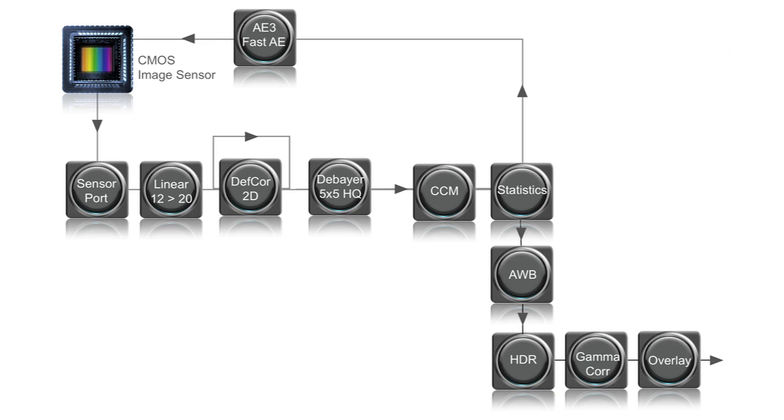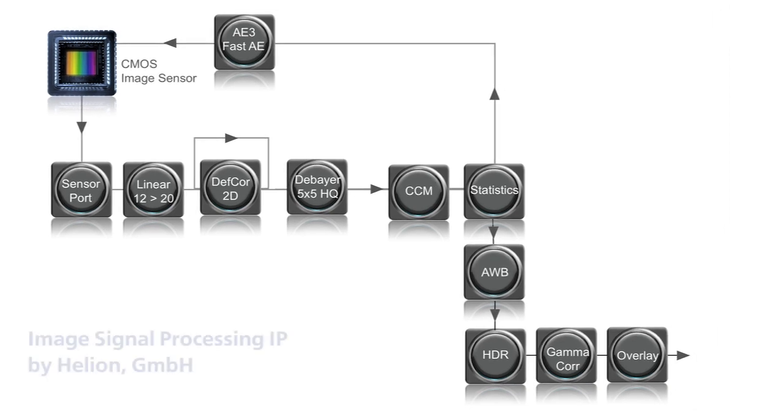A typical image signal processing pipeline in the Lattice Video Camera development kit incorporates many intellectual property blocks connected together to form the entire pipe. We use only a small subset of available IP in the demo, but the kit is supported with a very comprehensive library of intellectual property for image signal processing tasks.